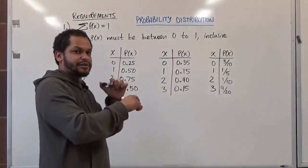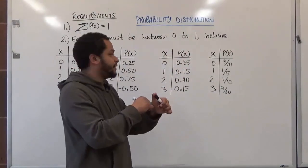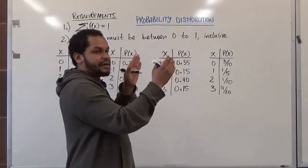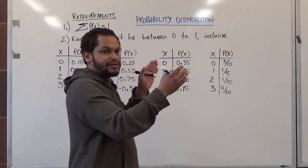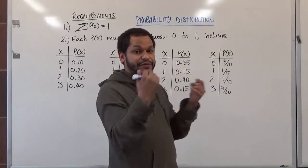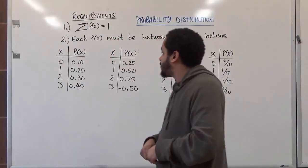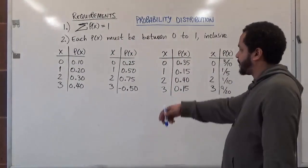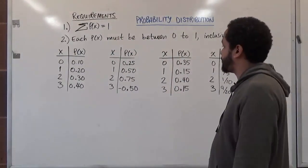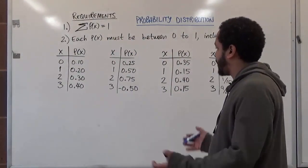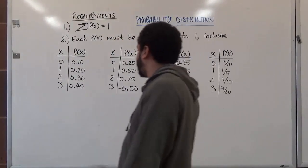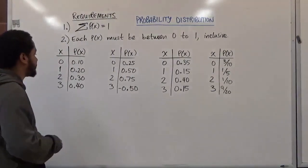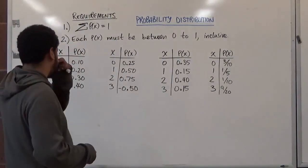That means it could be 0 and it could also be 1, but all the probabilities cannot be less than 0 and they cannot be greater than 1. So let's check which of these four probability distributions are valid and useful for computing the mean, variance, and standard deviation.